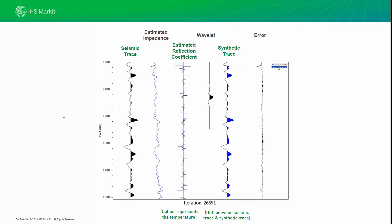We have a synthetic trace which is a near-perfect match to the original seismic trace. The key thing here is that now we know the parameters that go to make up the synthetic trace. We have this highly detailed estimated impedance trace, and this is what we will invert on.